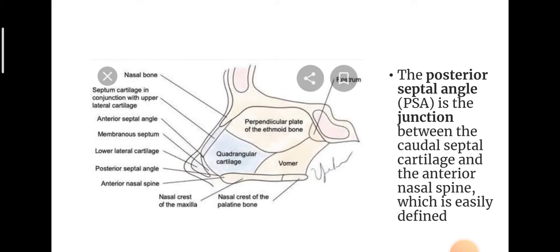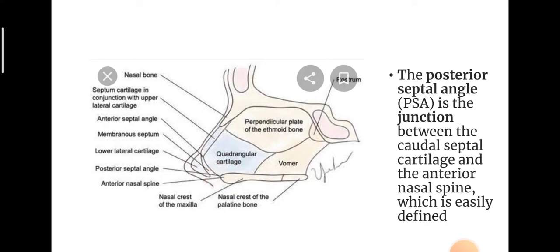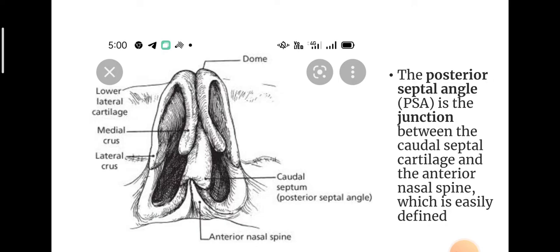The posterior septal angle is the junction between the caudal septum cartilage and the anterior nasal spine. The junction between the caudal septum cartilage and the anterior nasal spine — that is the posterior septal angle.